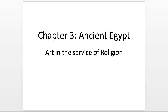Hey class, we're starting chapter 3 about ancient Egypt — your book says from Narmer to Cleopatra. My subtitle for it is 'Art in the Service of Religion,' which is not in your book. I think this is a great way to think about the art of ancient Egypt, because we'll see a lot of art made for beliefs about the afterlife as well as kingly power, which explains why they made these grand and wondrous objects.